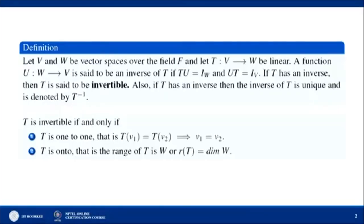In this lecture we will see how we can find the inverse of a linear transformation. First, a definition: let V and W be vector spaces over the field F, and let T be a linear transformation from V to W. A function U from W to V is said to be an inverse of T if T∘U equals the identity of W and U∘T equals the identity of V. If T has an inverse then T is said to be invertible. Also, if T has an inverse then the inverse of T is unique and is denoted by T inverse.